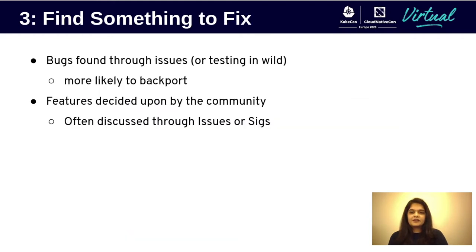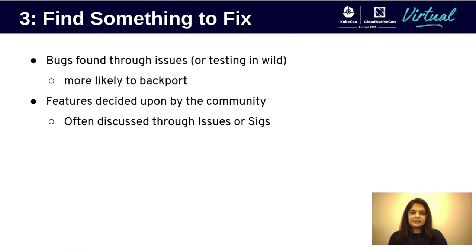So now that you understand the project at a high level, you've cloned the repository and played around with it a bit, the next step is to find something to work on. All repositories have an issues page which has a list of tasks that need to be done. These issues can broadly be broken up into two main categories: bugs and features.